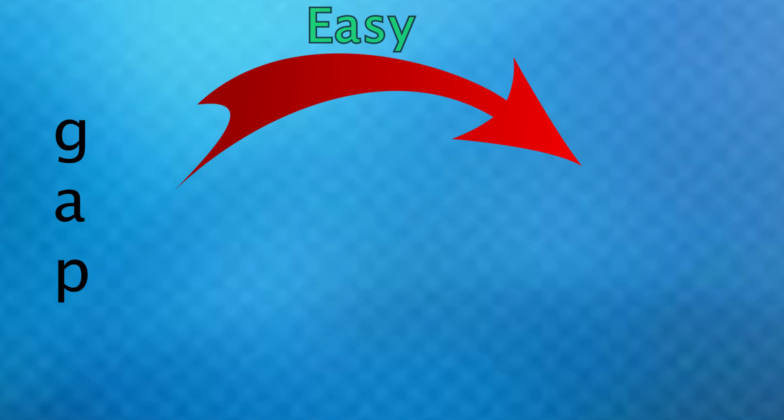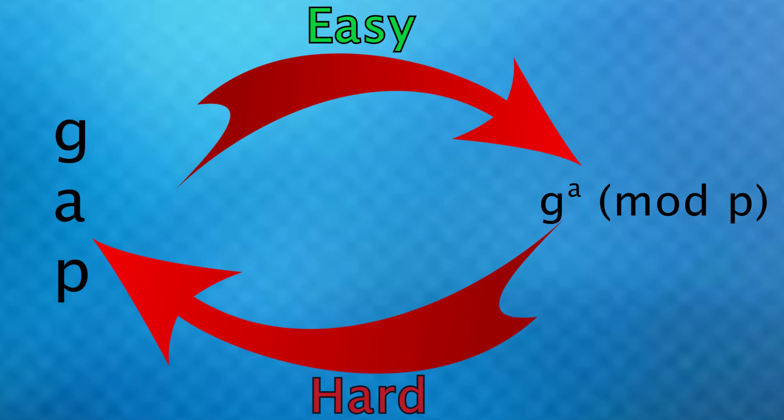So again if you know G, A, and P it is easy to find G to the A mod P but if you know G to the A mod P it is very hard to go back and find A or find G to the AB for that matter unless you have that value of B but of course your friend kept that a secret.